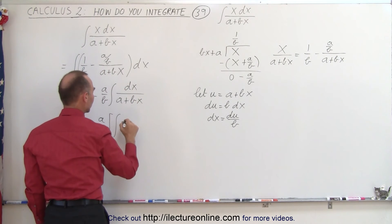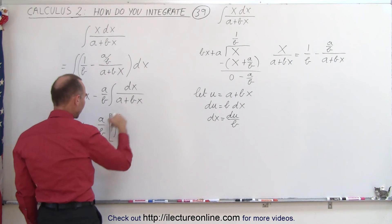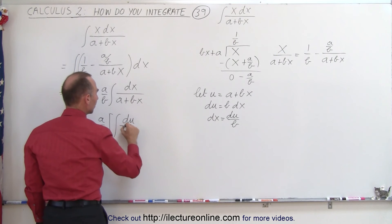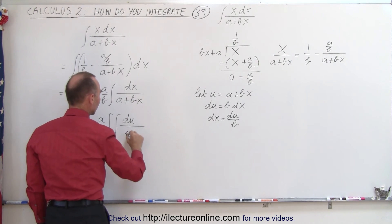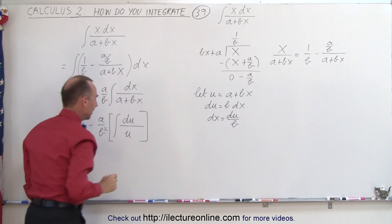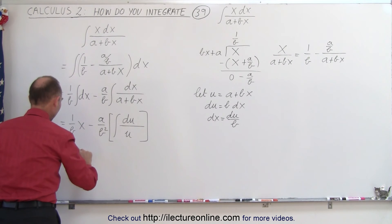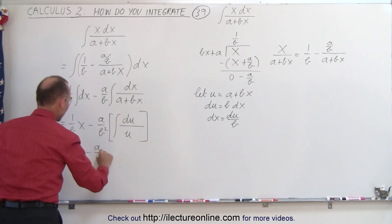And so this now becomes the integral. Instead of dx, we're going to write 1 over b. So that b comes here. We'll make that a b squared now. So 1 over b times du divided by, in the denominator, this becomes u. And that's, of course, that easy integral we just talked about.